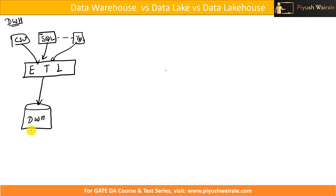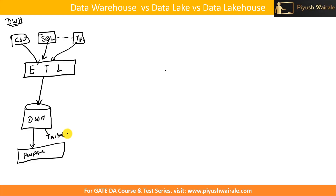Once the data is in the data warehouse, we can use it for multiple purposes — for example, building AI/ML models, for business intelligence purposes, or for data analytics purposes. This is the simple architecture of a data warehouse we discussed in the previous video.